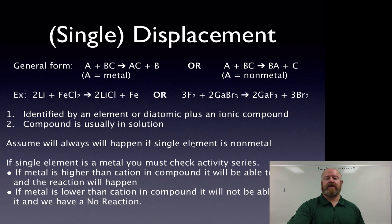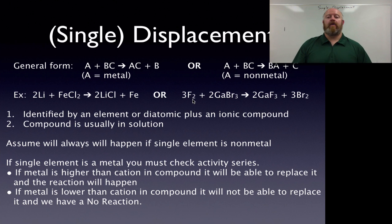And then one thing we're going to do, we're going to assume this always will happen if this single element is a non-metal. So for this side, if we have a non-metal, we're going to assume the reaction always happens. However, if we have a metal that's by itself, we actually have a way to determine if the reaction is going to run or if the reaction never happens in the first place. To do that, we have to look at something called the activity series. Basically, what the activity series is, it's a ranking list that tells us which metals are stronger than the others.